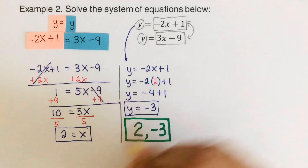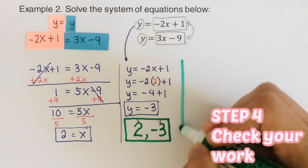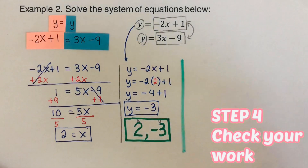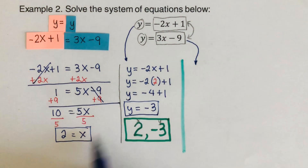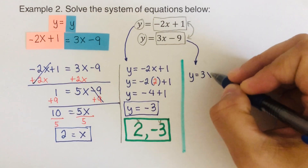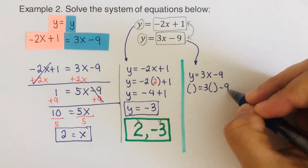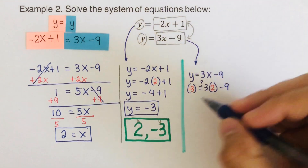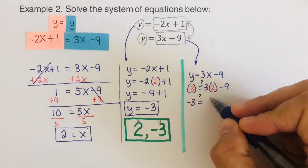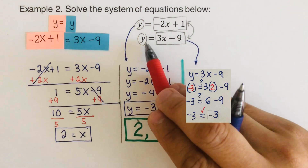Remember, this is an ordered pair — x equals 2 and y equals negative 3. The fourth step is to check our work. We plug the values back into both equations. For the second equation, y equals 3x minus 9: negative 3 equals 3 times 2 minus 9, which is 6 minus 9, so negative 3 equals negative 3. That means we are correct — it worked for the second equation.